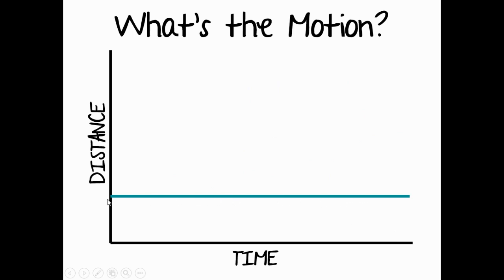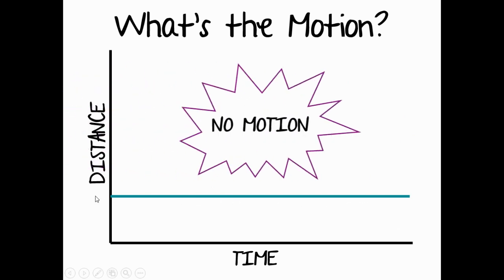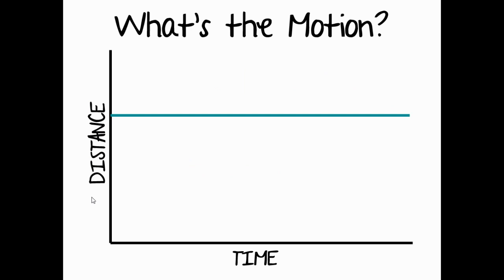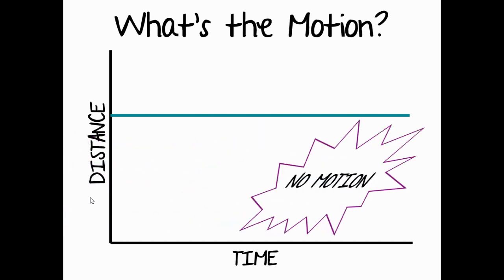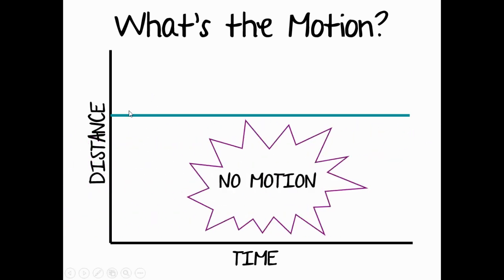Because this is a flat line, this is a no motion line. This is also a no motion line — time is passing but their distance is not changing. As we start going through these, I'm hoping you will see and be able to describe the type of motion before I reveal the answer.